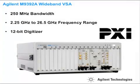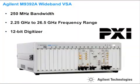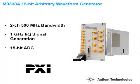Performing digital pre-distortion measurements requires two to five times oversampling to accurately model the power amplifier's higher-order nonlinearities. To support this, the M9392A vector signal analyzer with 250 MHz instantaneous bandwidth and the M9330A arbitrary waveform generator with up to 1 GHz modulation bandwidth can be used to support many emerging wireless communication standards.